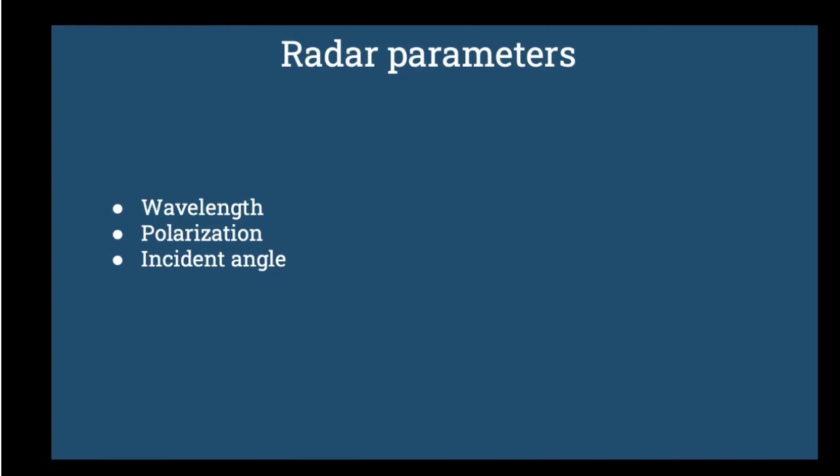As we discussed earlier, SAR image contains information about dielectric properties of objects and surfaces and also the information of the structure. Now we will talk about the parameters that impact the characteristics of a signal such as wavelength, polarization, and incidence angle.